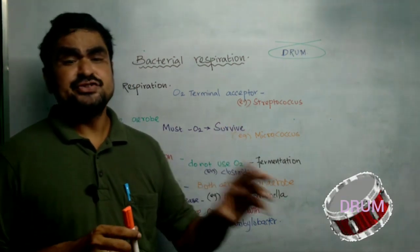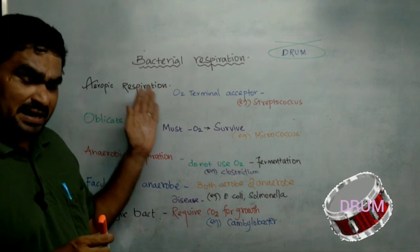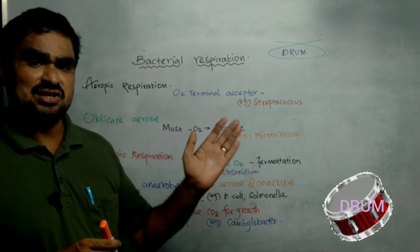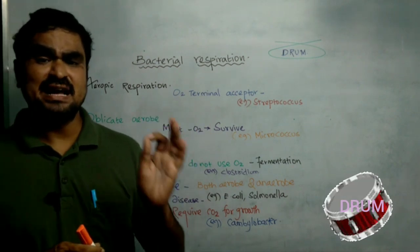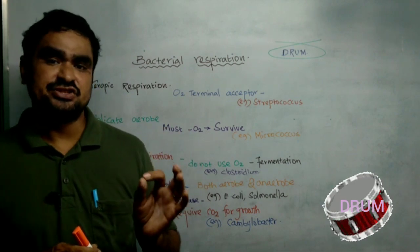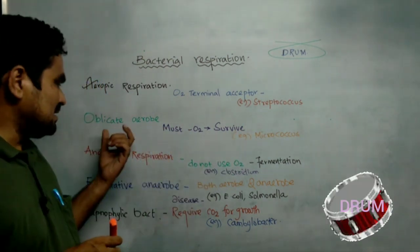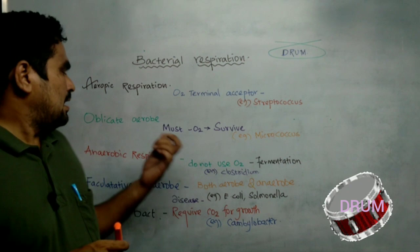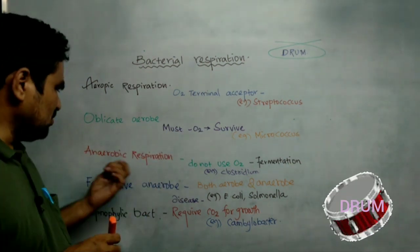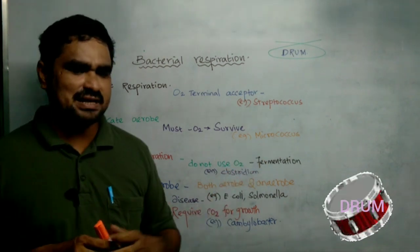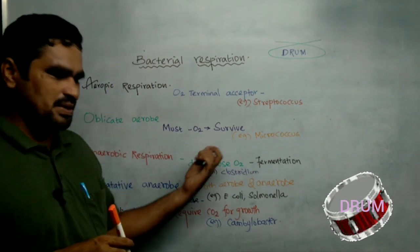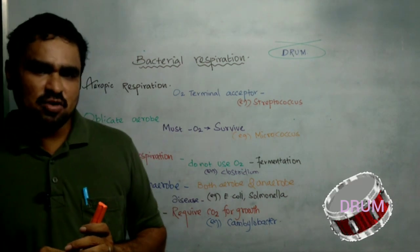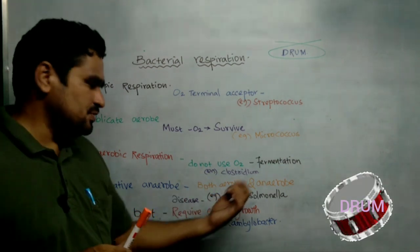To summarize, there are five kinds of respiration in bacterial cells. First, aerobic respiration — oxygen is necessary as the terminal acceptor of electrons; example: Streptococcus. Second, obligate aerobes — must have oxygen for survival; example: Micrococcus. Third, anaerobic respiration — do not utilize oxygen; example: Clostridium. Fourth, facultative anaerobes — perform both aerobic and anaerobic respiration; examples: E. coli and Salmonella.